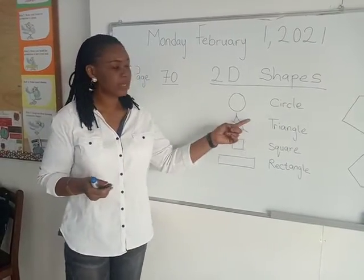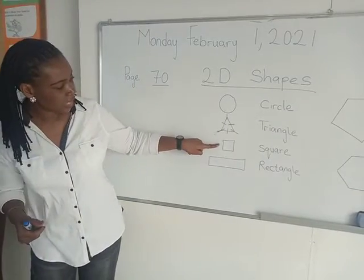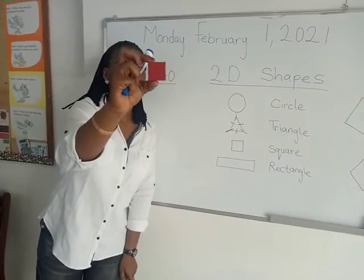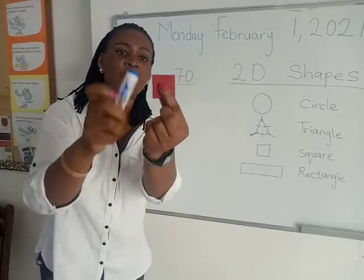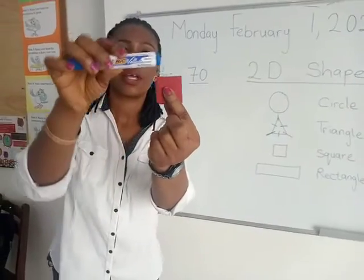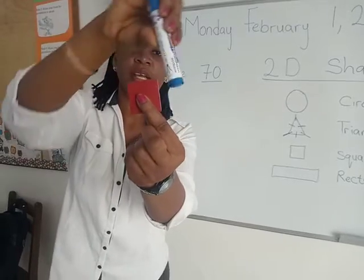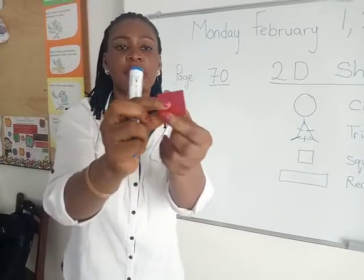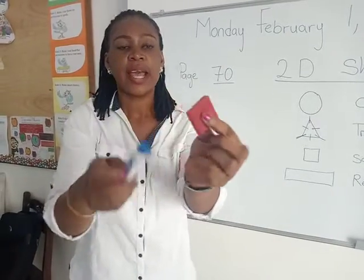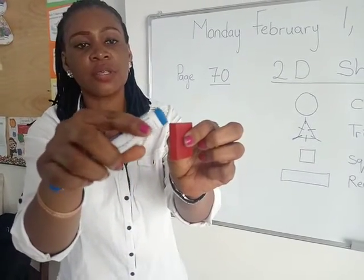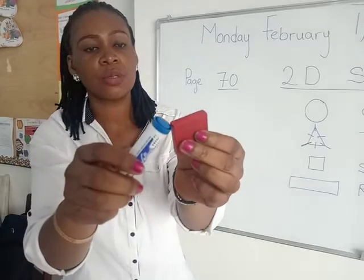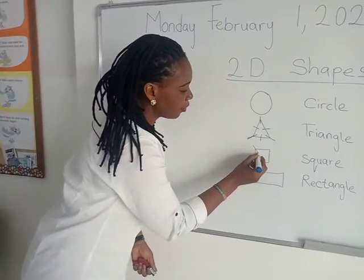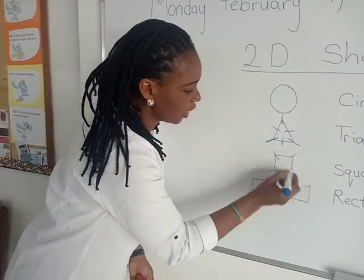A triangle has three sides and three corners. Find an object shaped like a triangle at home. Next we move to the square. Take a proper look at it — it has four equal sides, the same measurement on each side. It also has corners: one, two, three, and four. So the square has four corners and four sides.